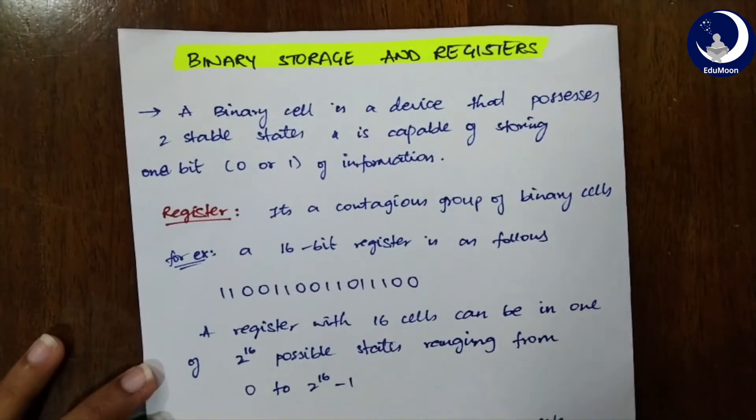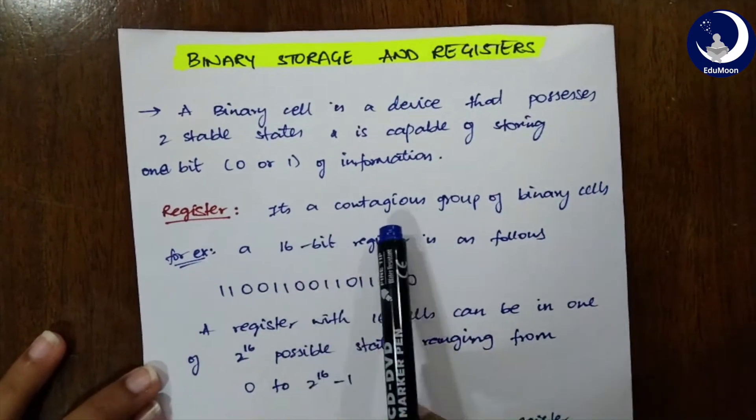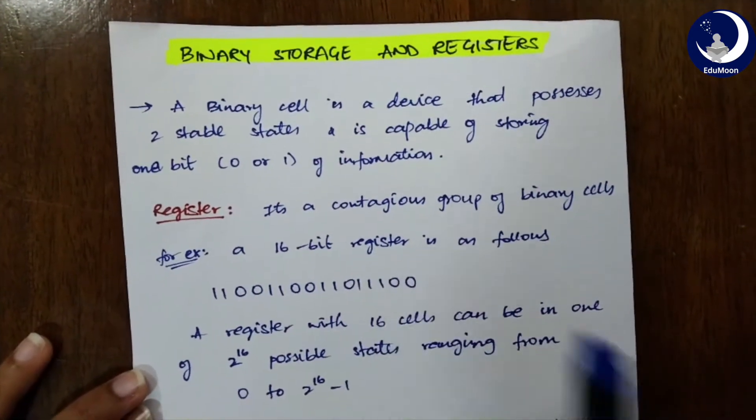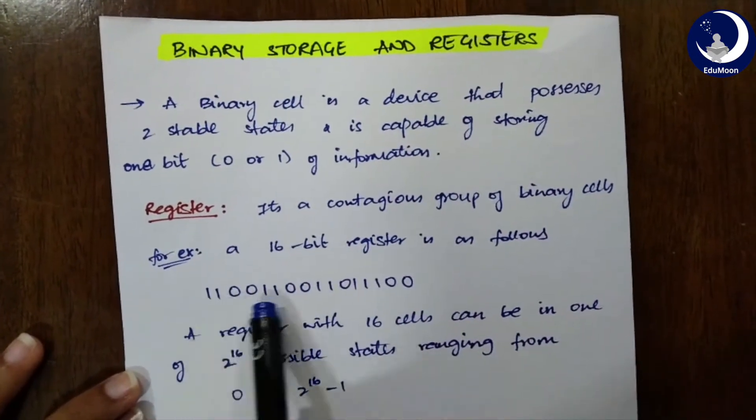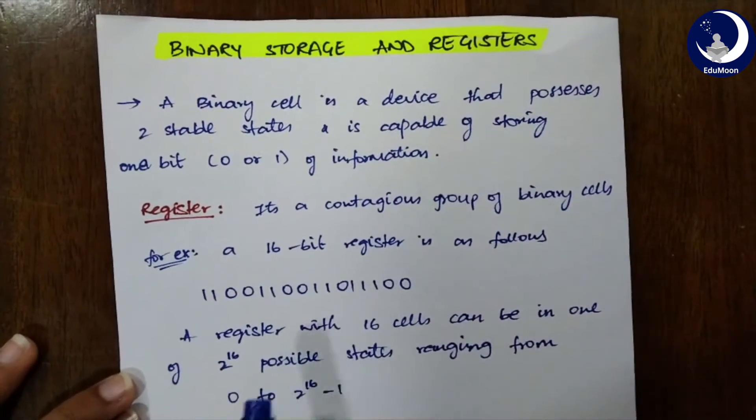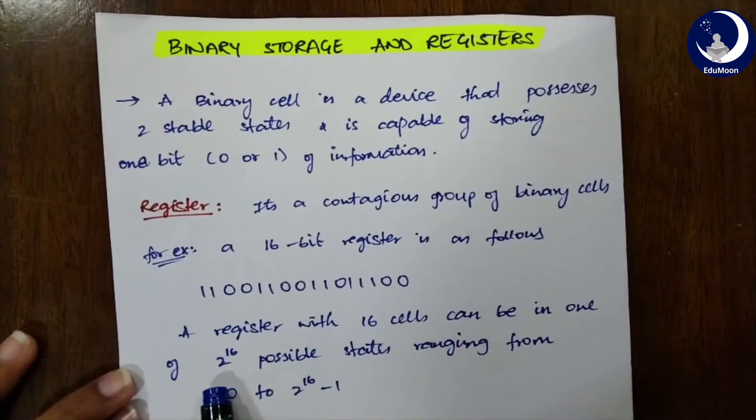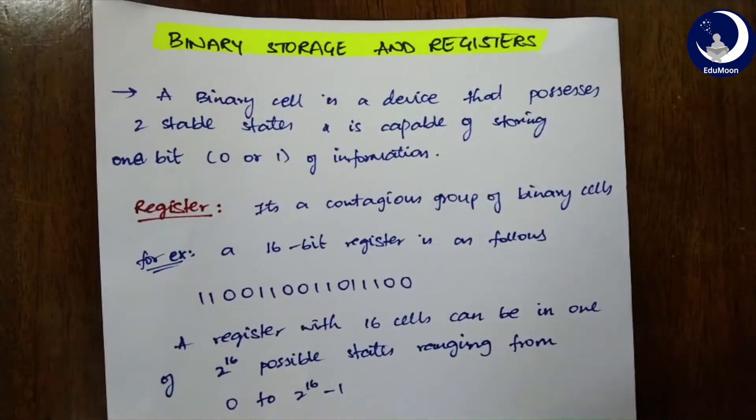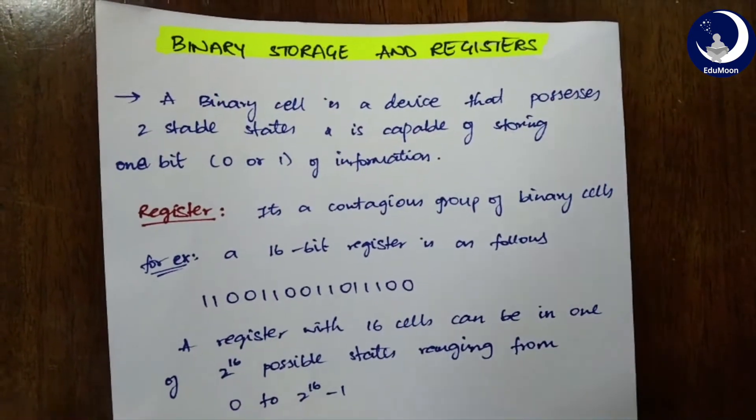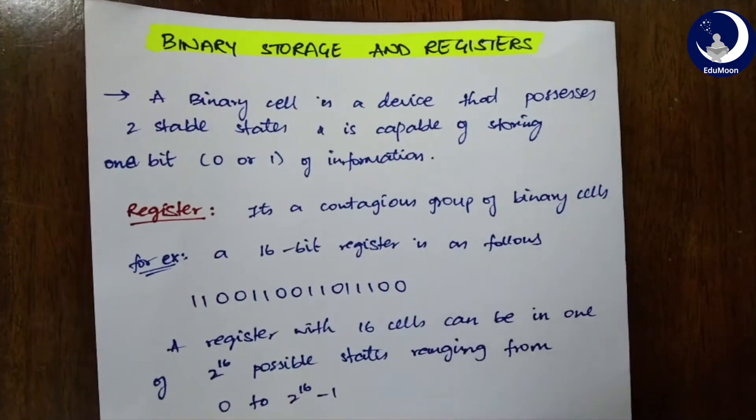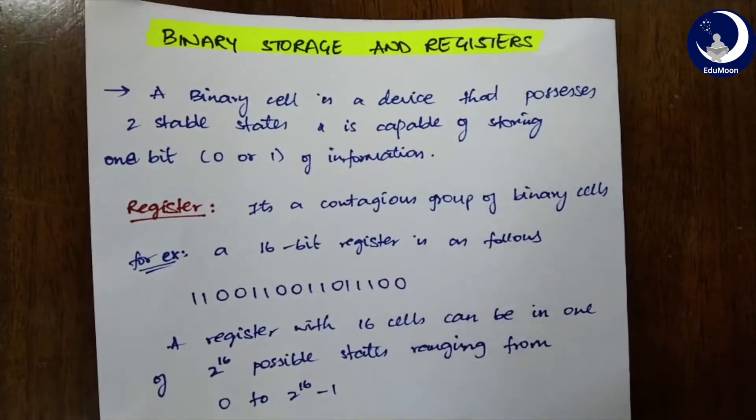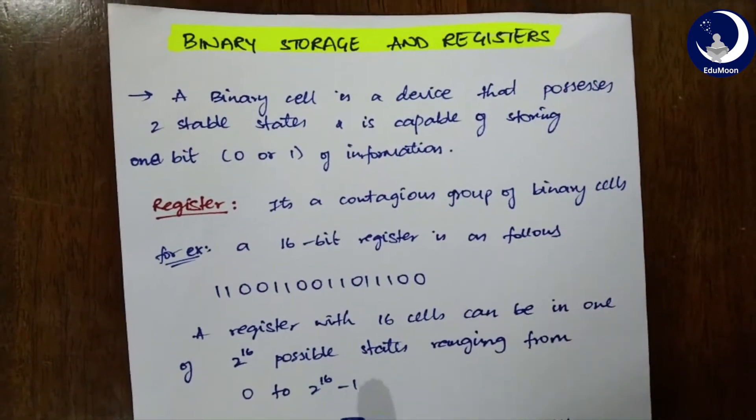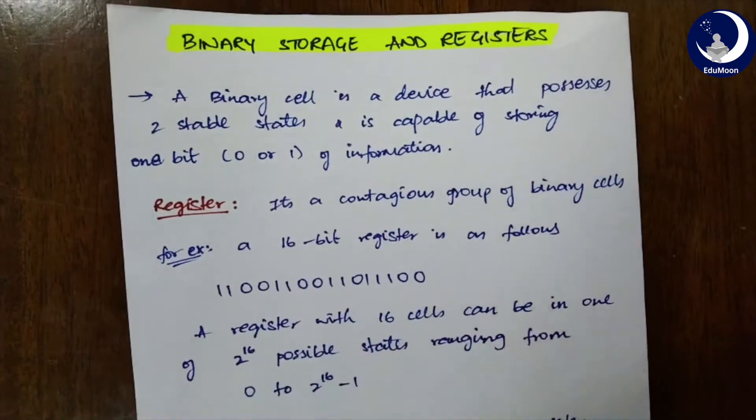Now let's get into the register. What is a register? A register is a contiguous group of binary cells. For example, if we consider a 16-bit register, it can have zeros and ones values. A register with 16 cells can be in one of the 2 power 16 possible states. If we consider a 4-bit register, we will be having 2 power 4 possible states. For an n-bit register, we will be having 2 power n possible states which are ranging from 0 to 2 power n minus 1. Here, our n value is 16.